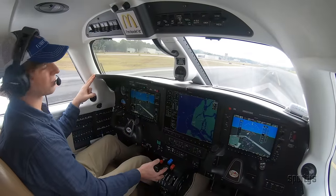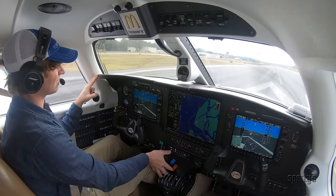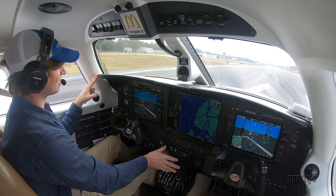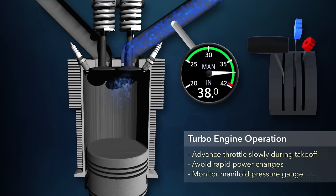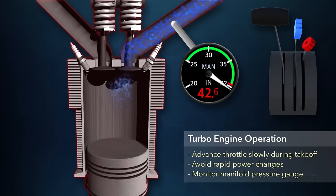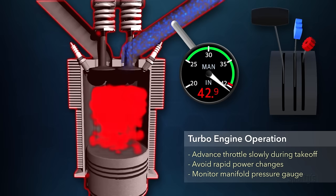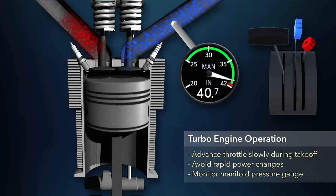Under some circumstances, such as rapid throttle movement, especially with cold oil, it's possible that an over-boost may still occur. This would most likely happen during the first takeoff on a cold day, or it could also occur if the pilot suddenly applies full throttle while in flight. It is therefore necessary that the pilot anticipate these situations and monitor the manifold pressure to avoid exceeding the limit value.